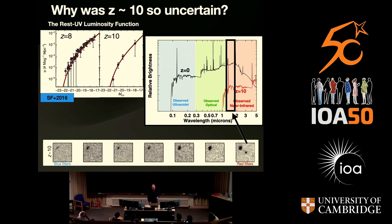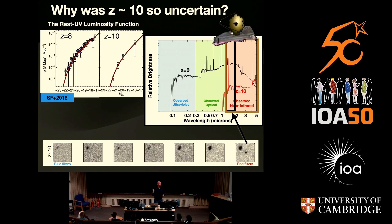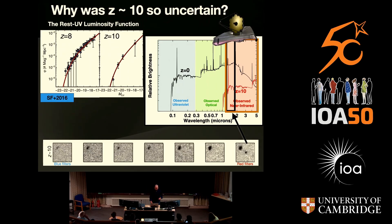Now with JWST, using NIRCam alone you access the full 1 to 5 micron regime. That gets you out to the Lyman break at a redshift of 10. As you go to higher redshifts you start to lose some wavelengths, but if you go ultra-deep with MIRI you can start to recover some of that.